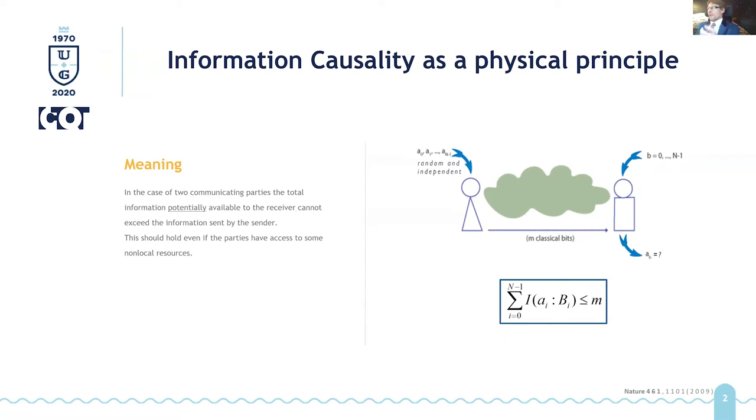So we may imagine that the receiver is getting some sort of message and when he chooses to read the first page the second page disappears and the other way around. But since he in principle can read both and the sender doesn't know what the receiver is going to send, there shouldn't be a way for her to transfer more than the limit imposed by the channel. And this should hold even if the parties have actually access to some non-local resources, for example, entangled states or whatever.